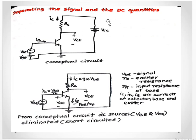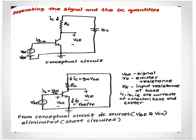Separating the signal and DC quantities: in the conceptual circuit, the lowercase VBE represents the AC signal source, while capital VBE corresponds to the DC source which keeps the base-emitter junction forward biased. If you remove VBE, all remaining voltages are DC — the currents and voltages in that circuit are all DC quantities.